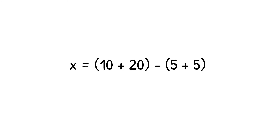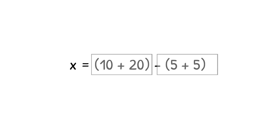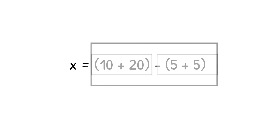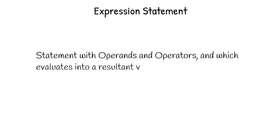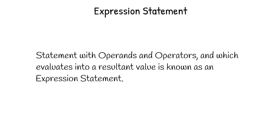A single expression statement can also contain multiple expressions. For example, x = 10 + 20 - 5 + 5 contains three expressions: 10 + 20 is one expression, 5 + 5 is another, and 30 - 10 is the third. Hence, an expression statement can contain one or more expressions. Any statement in Python that has operands and operators and evaluates into a resultant value is known as an expression statement.